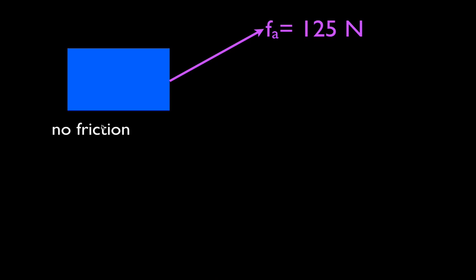We have the situation where we have an object — it doesn't matter what object it is, just some object: a sled, a box, a car — something that you're going to be pulling, and there's no friction between the object and the surface. We're going to apply a force of 125 newtons above the horizontal, and we're going to move the object 50 meters. We want to know how much work does this force do when it moves this object 50 meters.